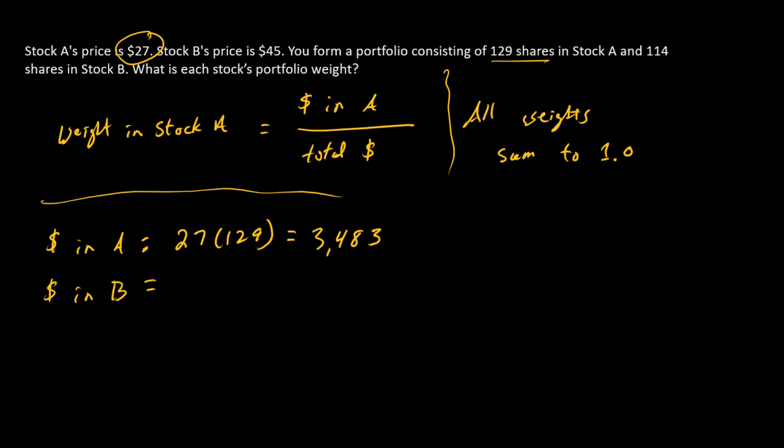The dollars in B is going to be price of B times the number of shares in B, 45 times 114. That's 5,130. Alright.